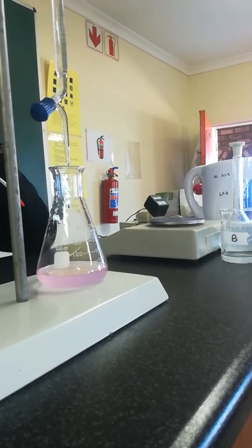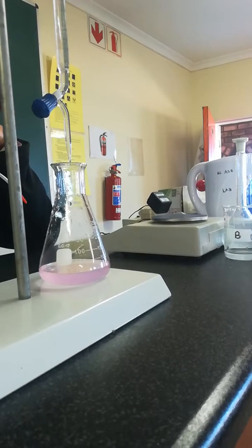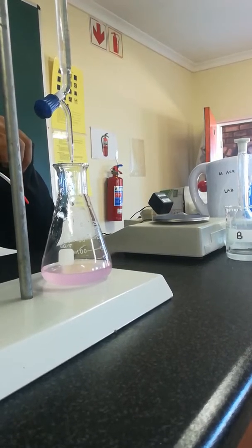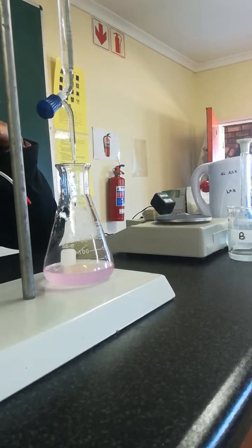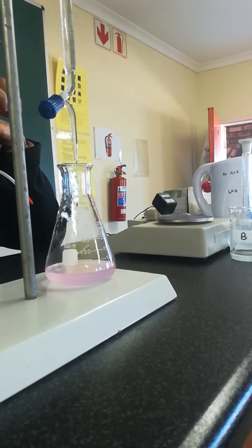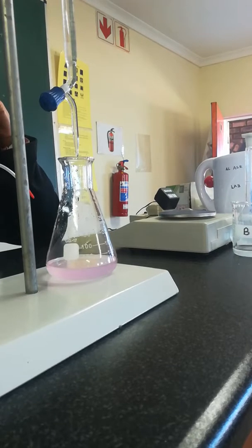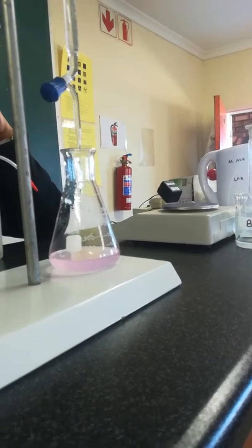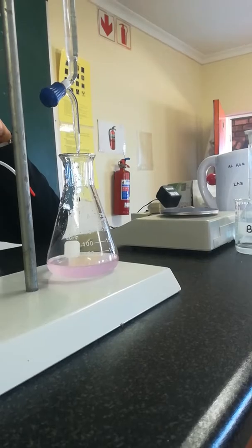Because now if I put more, it will turn pink. It's a pale pink. This is just light pink. But if I put one more drop, it will turn dark pink. So when it's almost neutral, it turns light pink. Then when it's basic, it turns dark pink.